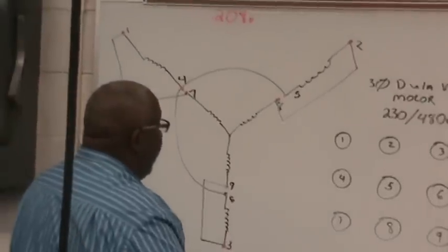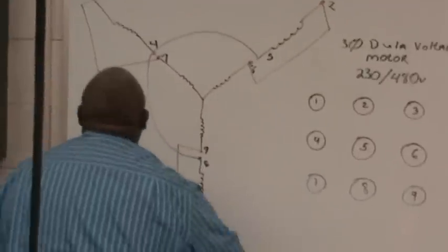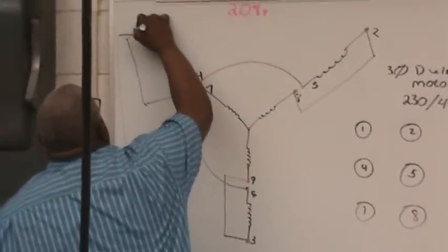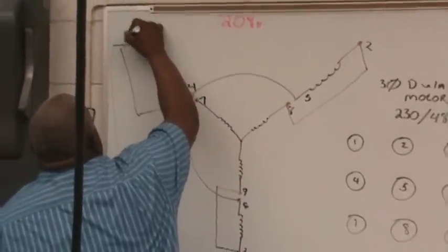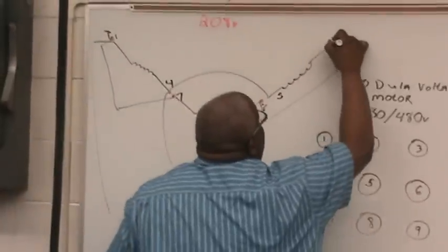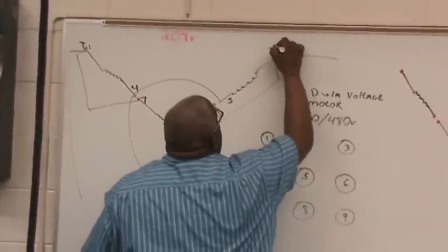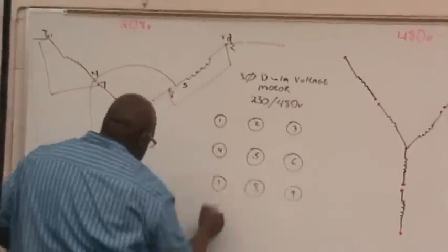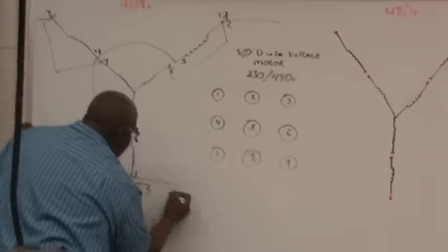When you're bringing your lines in, line one goes to terminal one, line two goes to terminal two, and line three goes to terminal three.